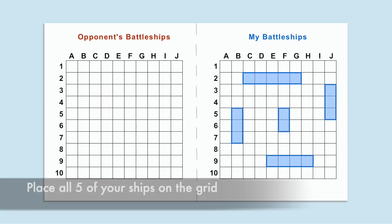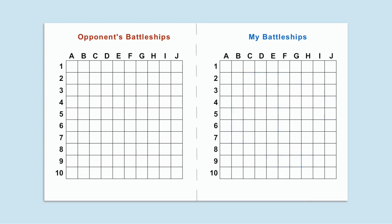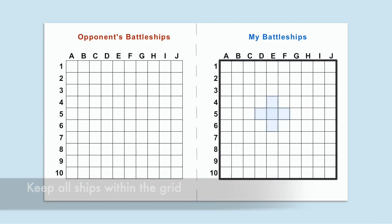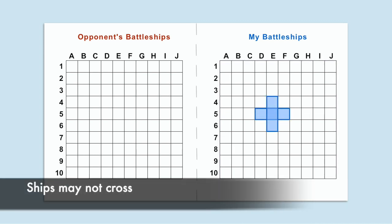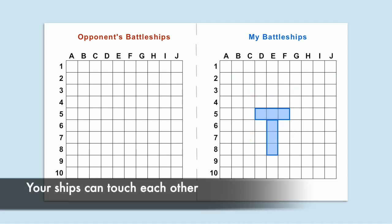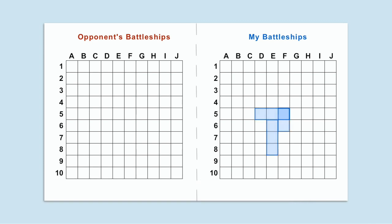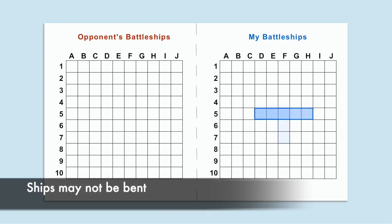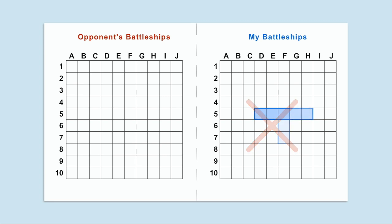They will do this for all of their ships, placing them wherever they choose. All ships must be placed within the grid, and ships are not allowed to physically cross each other. The ships can, however, touch. Players are also not allowed to split their ships — a 2 space destroyer cannot be split into single spaces. The ship must remain intact. Players may also not bend their ships; they must remain in a straight line.